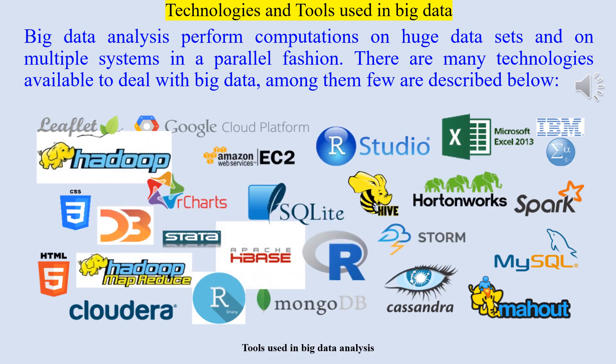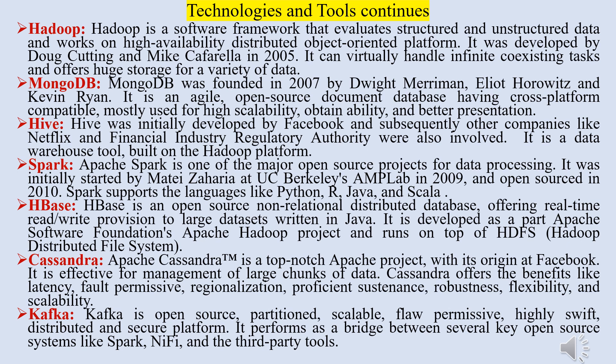Big Data analysis performs computations on huge data sets on multiple systems in a parallel fashion. Technologies available include Hadoop, MongoDB, Hive, Spark, HBase, Cassandra, Kafka and many more. Hadoop is a software framework that evaluates structured and unstructured data and works on a high-availability distributed object-oriented platform. It was developed by Doug Cutting and Mike Caffarella in 2005, can handle virtually infinite coexisting tasks and offers huge storage for a variety of data.